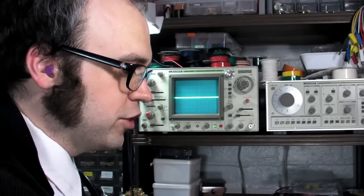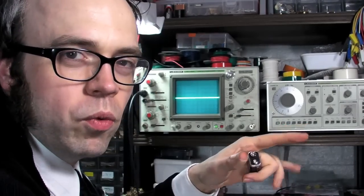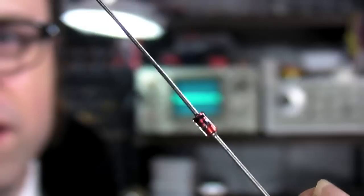But let's say you wanted to prevent an alternating signal from moving backwards. That could be accomplished with a diode.